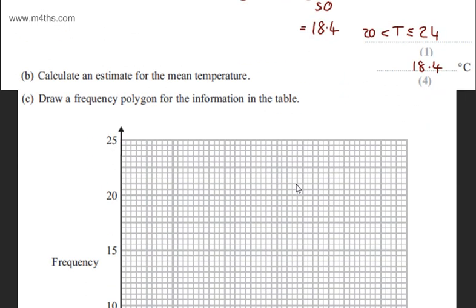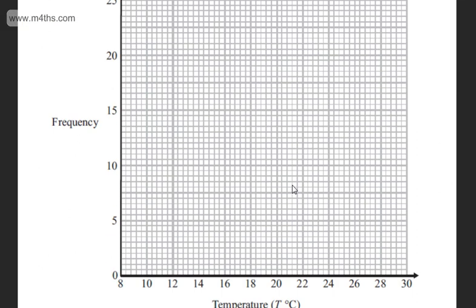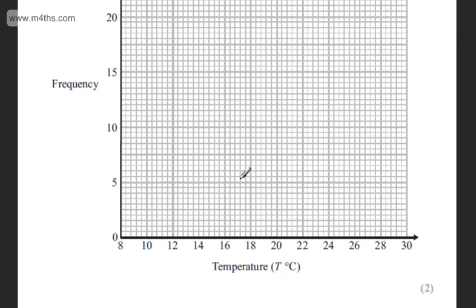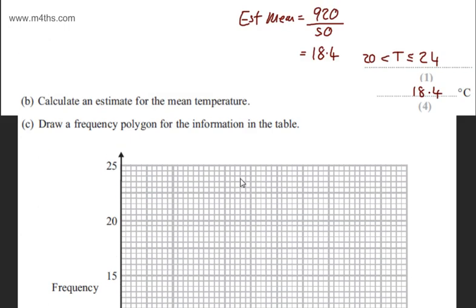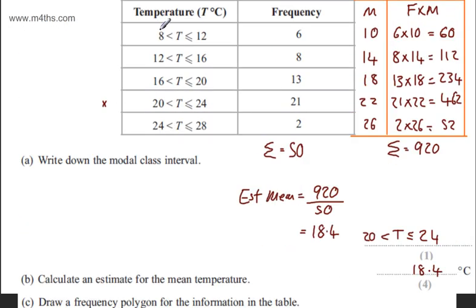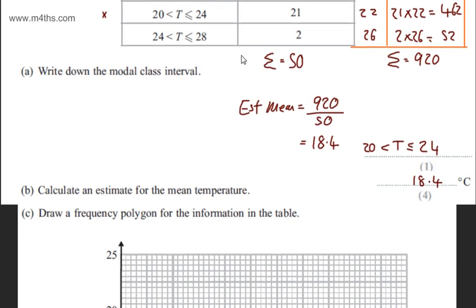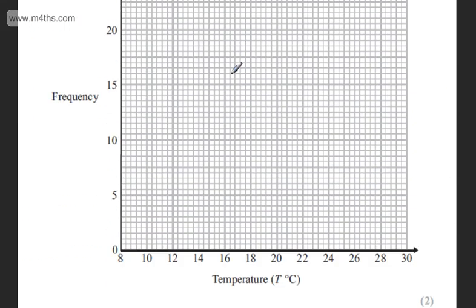In part C, it says draw a frequency polygon for the information in the table. This part carries 2 marks. Frequency polygons are plotted at midpoints. So if I look at the first one, I've got 8 to 12, so my midpoint is going to be 10, and the frequency is going to be 6. So let's go ahead and locate that. So that now is 10, 6. Just be careful. We can see now that 2 blocks is equal to 1.